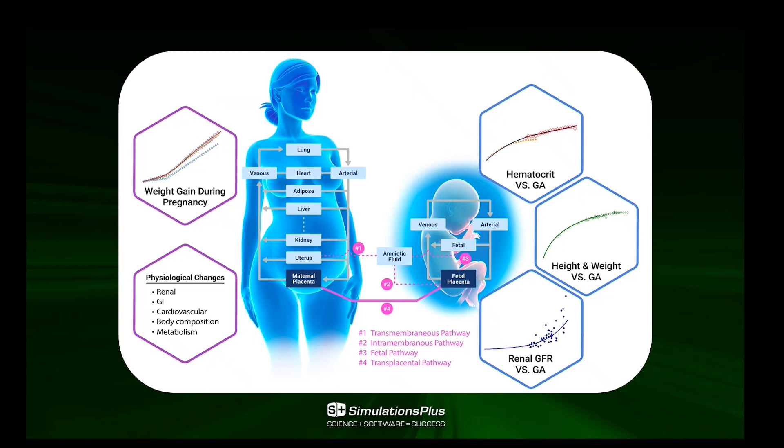Once again, as the pregnancy evolves, the hematocrit level on the fetal side, the fetus height and weight will also be evolving as well as the renal fractions.